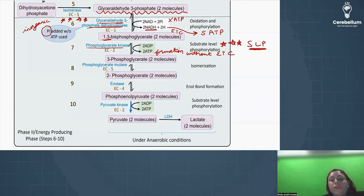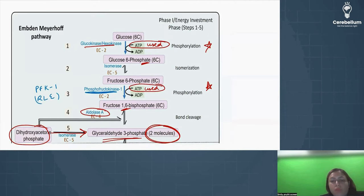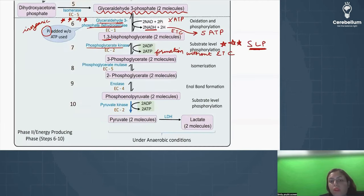Whenever there is involvement of ADP or ATP, whether ATP is used or ATP is produced, we have a kinase enzyme. Here ATP is used, then also kinase. Here ATP is produced, here also we have kinase: phosphoglycerate kinase, short form PGK. So we are done with the 7th step. Coming to 8th step.